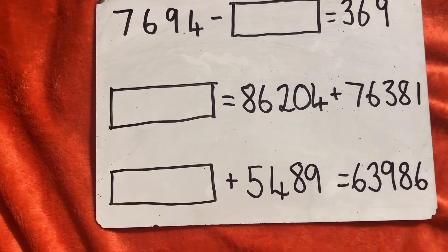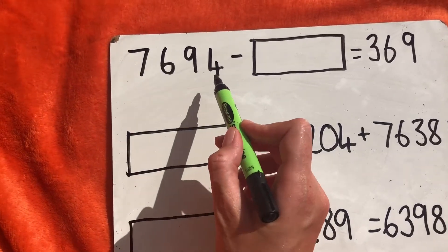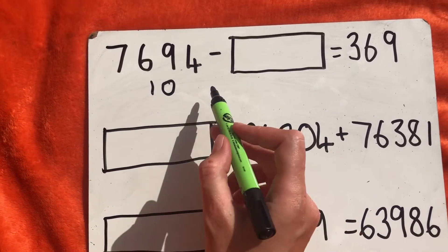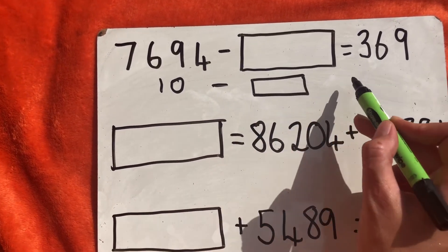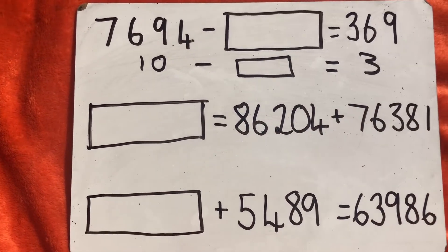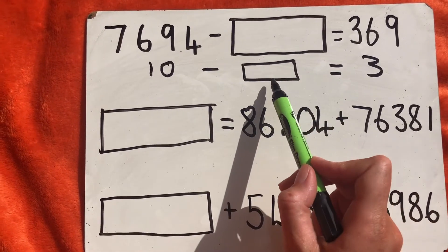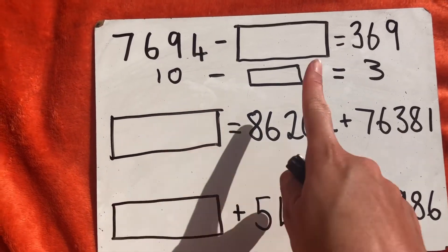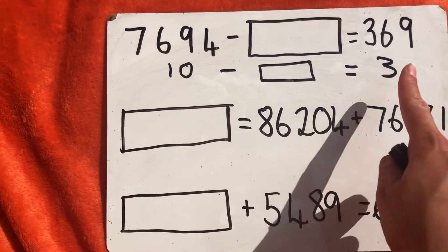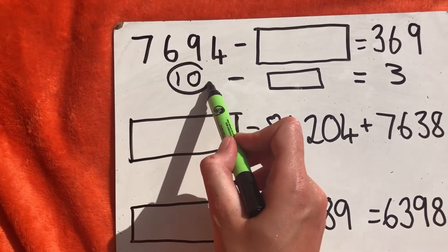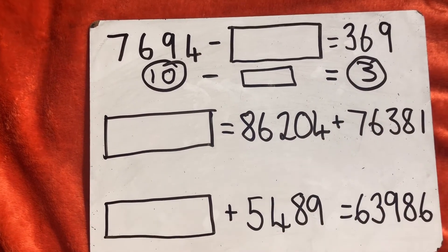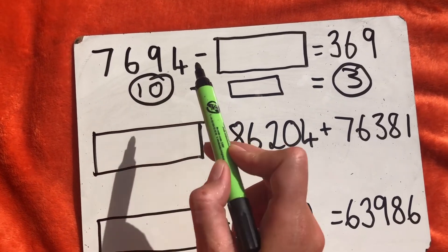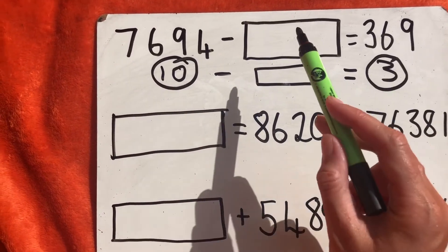Move those numbers around so you know where your missing number is. For example, if I had a missing number here with my answer as three, I'd start with my largest number to subtract from. Do I do the inverse and add? No, because ten plus three would be thirteen and that wouldn't make sense. So I need to do: this number subtract this number. That means I need to take my 7,694 and subtract 369 to get my missing number.